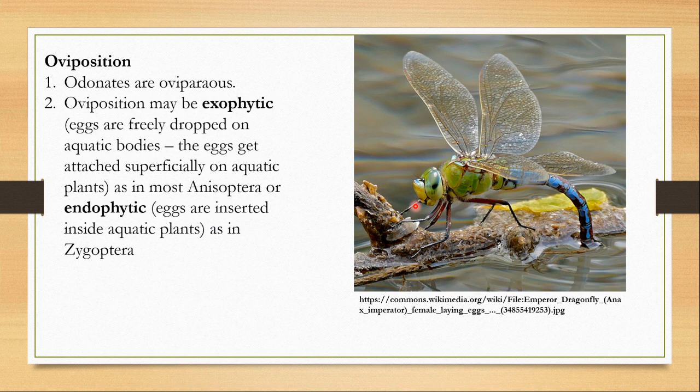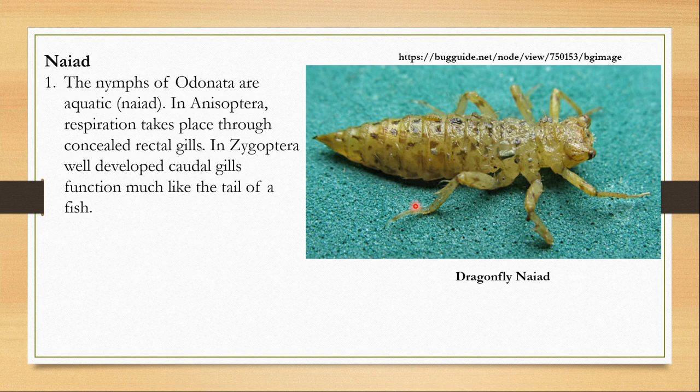In case of damselflies, the females have functional ovipositors. Dragonflies have vestigial or reduced ovipositors, not as functional as those of damselflies. Damselflies use their fully functional ovipositors to insert eggs inside aquatic plant tissue — this is endophytic oviposition.